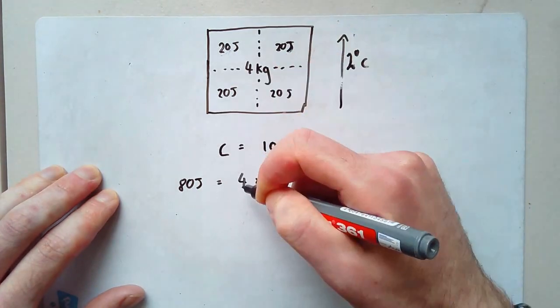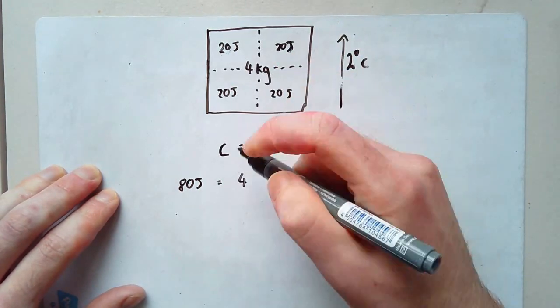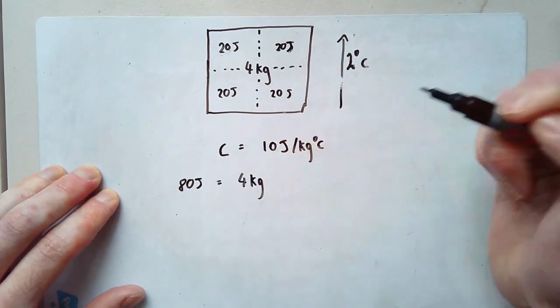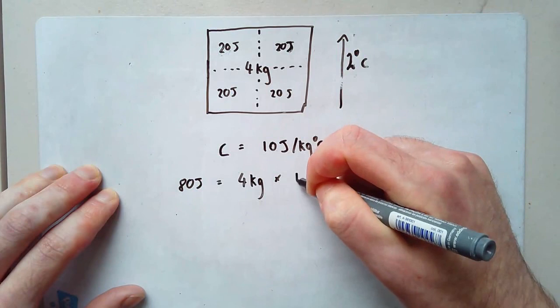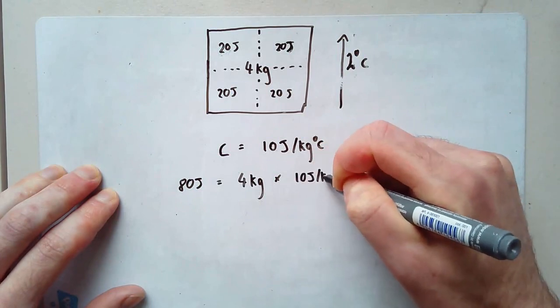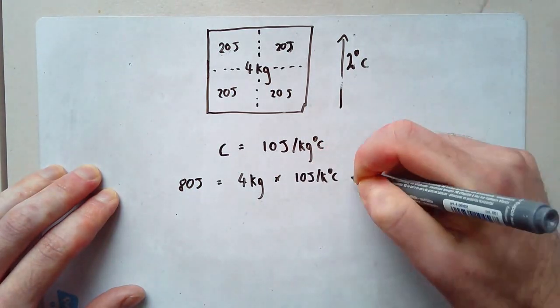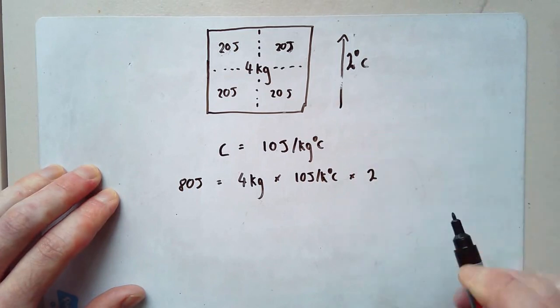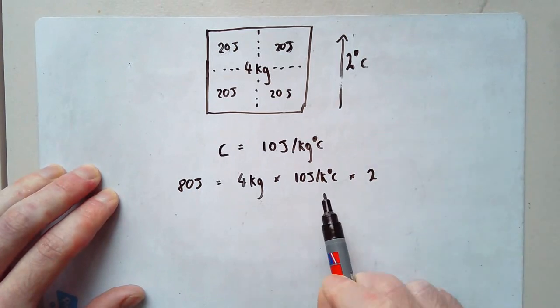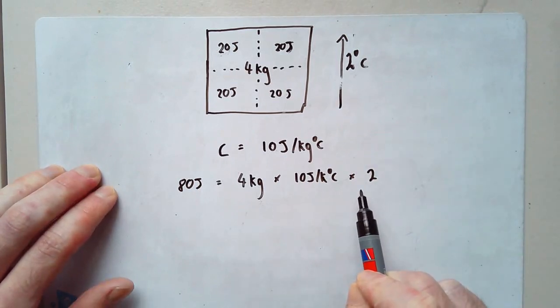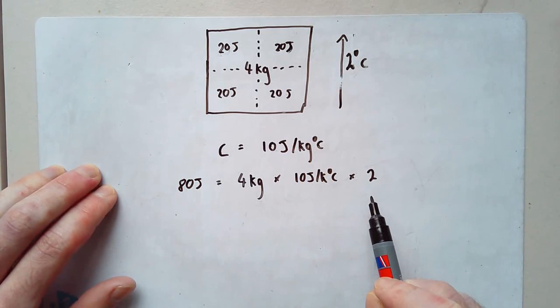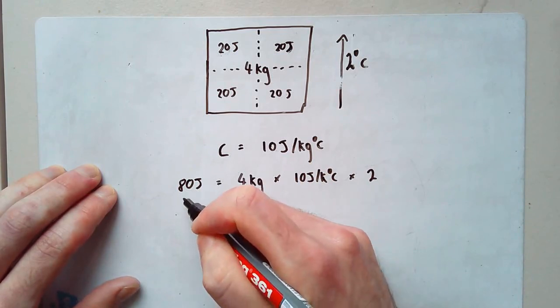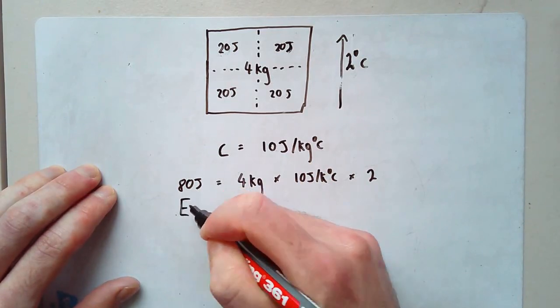I'll write the units to make it even clearer. Four kilograms times this number here, which is 10 joules per kilogram degree C, times by two. Four times 10 is 40, times two is 80. So what looks weird and terrifying is actually quite straightforward.